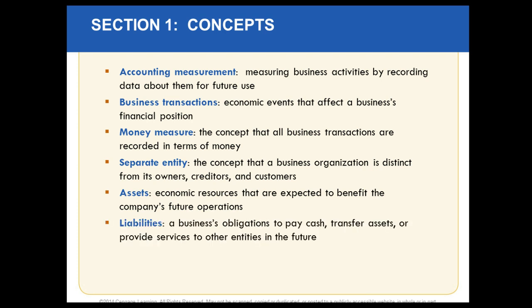Next we have something called liabilities. Liabilities are obligations or sacrifices a company has — obligations to pay cash, transfer assets, or provide services to other entities in the future. So let's say Keith wants to start a business and goes to the bank and takes out $100,000. That is going to be Keith's business's obligation — a sacrifice — because Keith needs to pay back that money in the future. A liability is something that you're going to owe, and it's going to continue into the future.